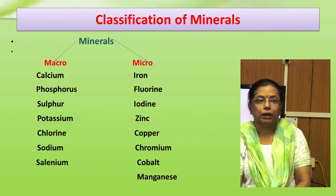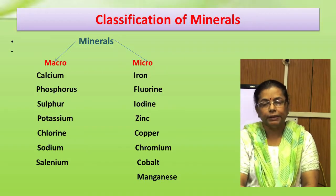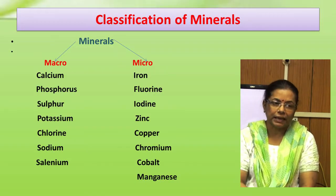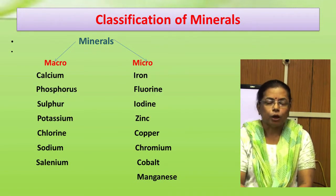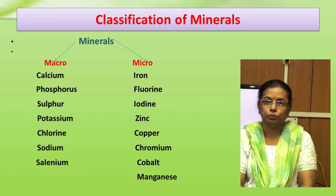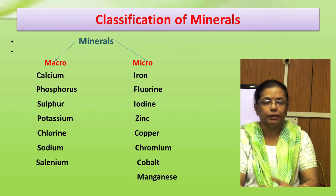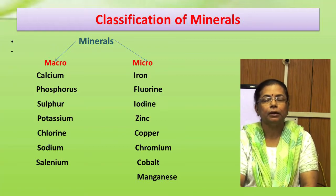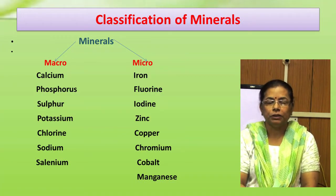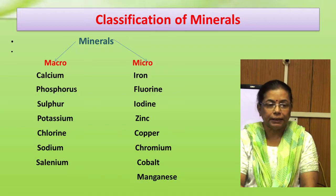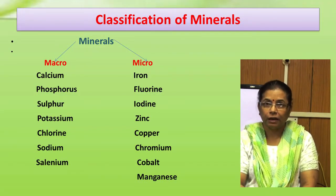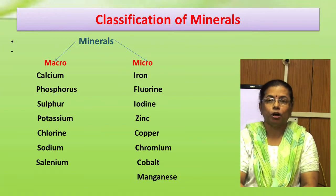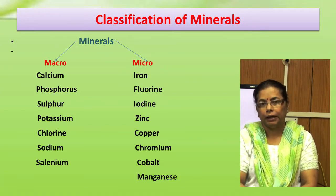Based on the amount present in our body, minerals are classified as macrominerals and microminerals. Macrominerals are those found in the body in larger amounts and their daily requirement is more than 100 mg. Microminerals are those present in the body in small amounts and their requirement is less than 100 mg.